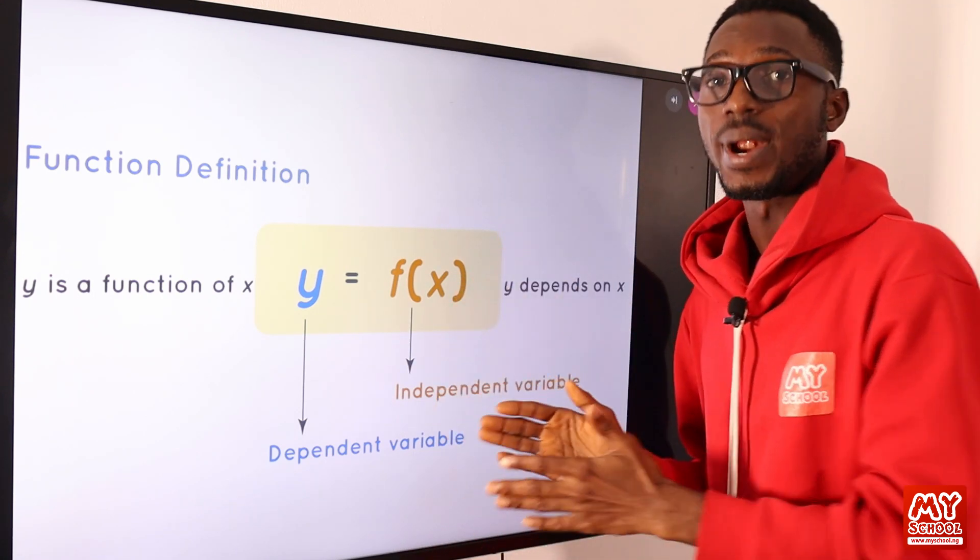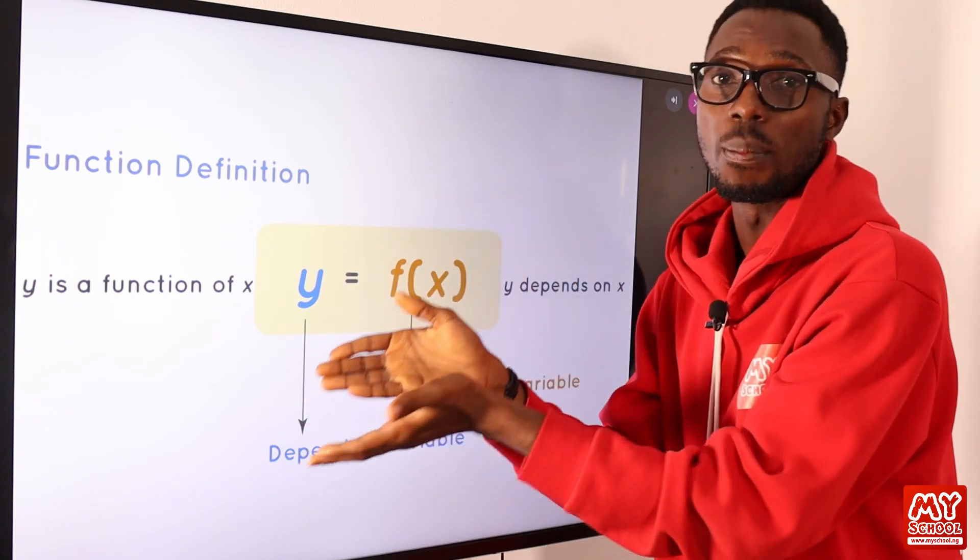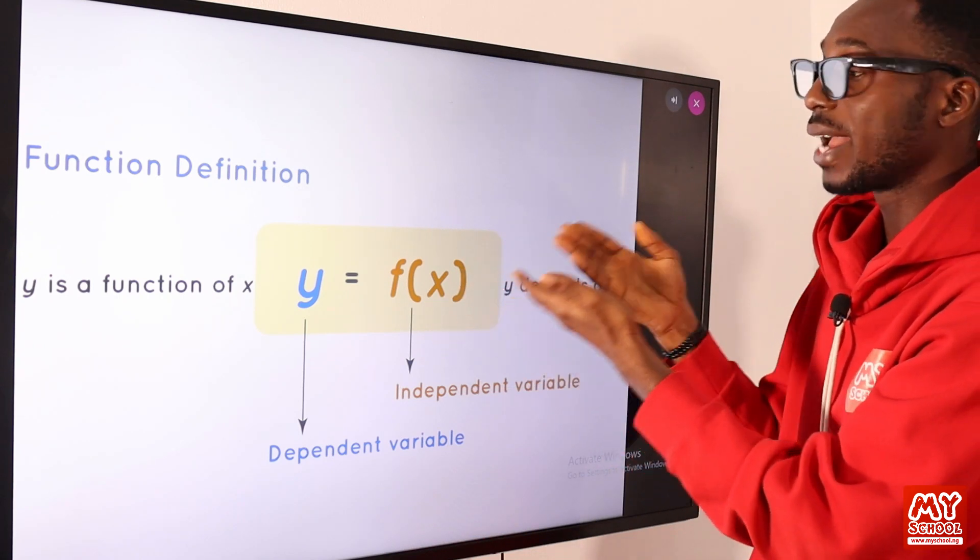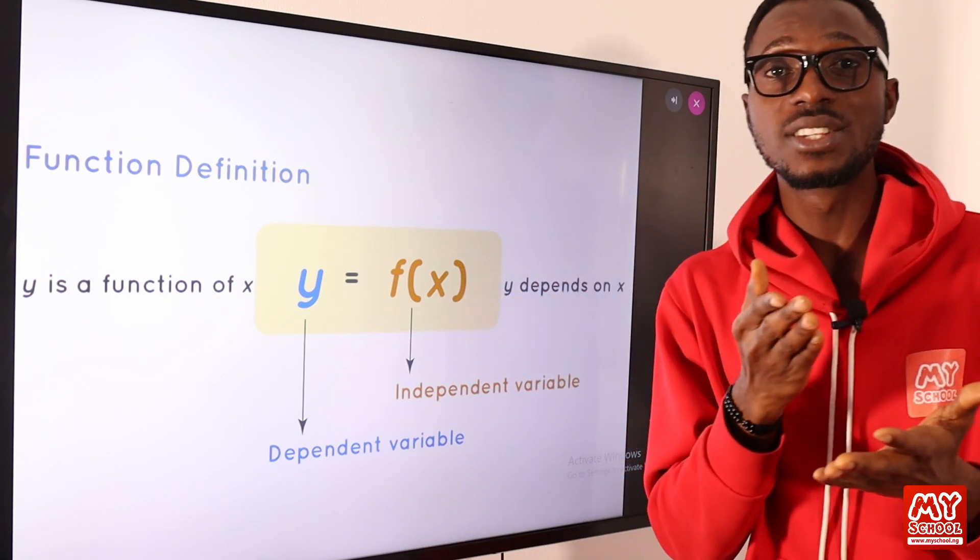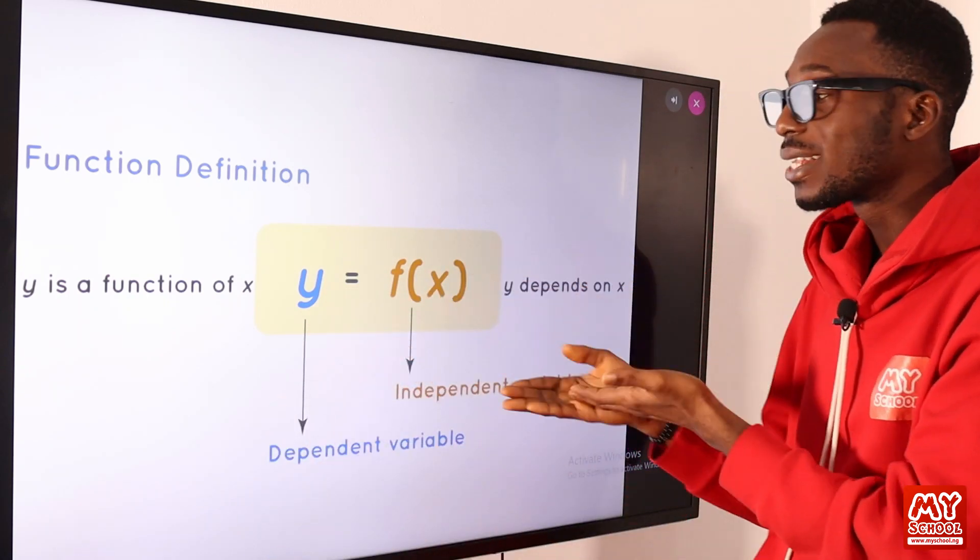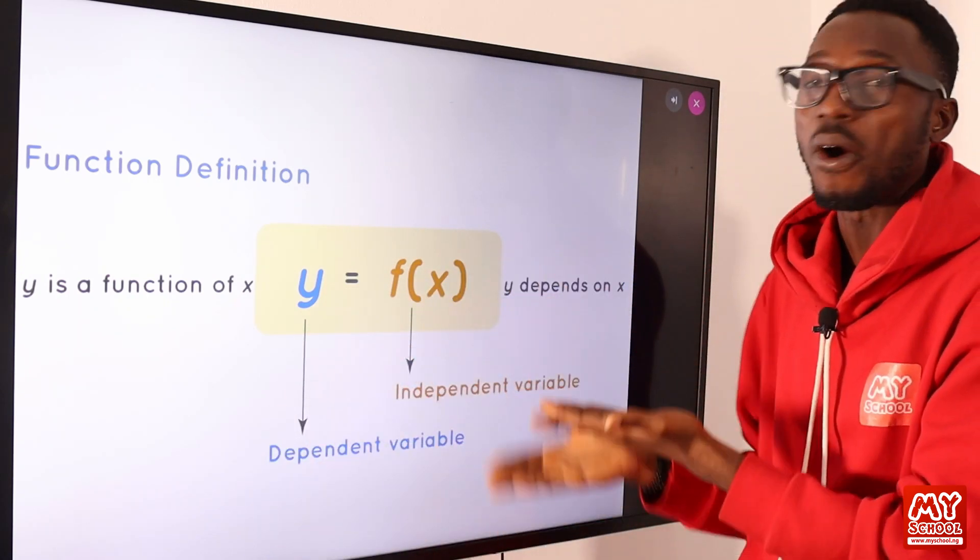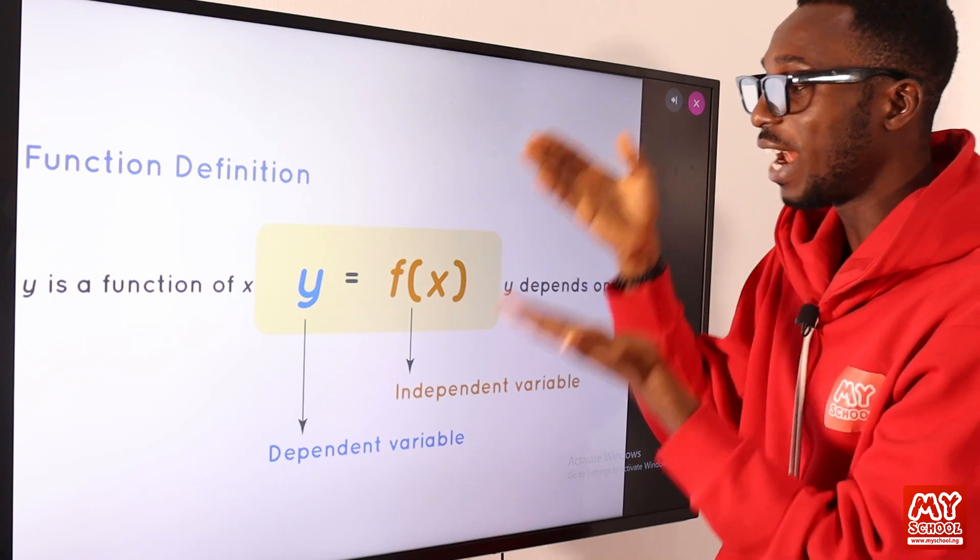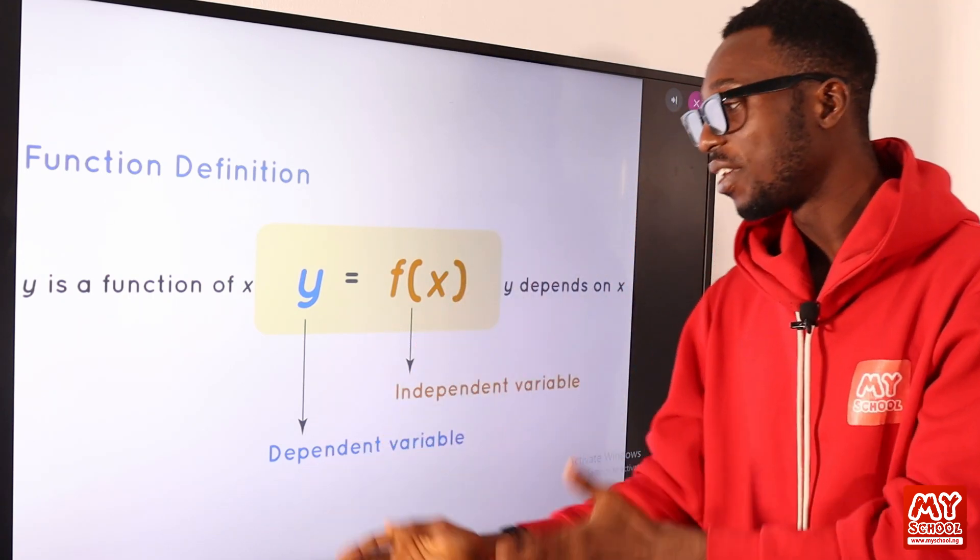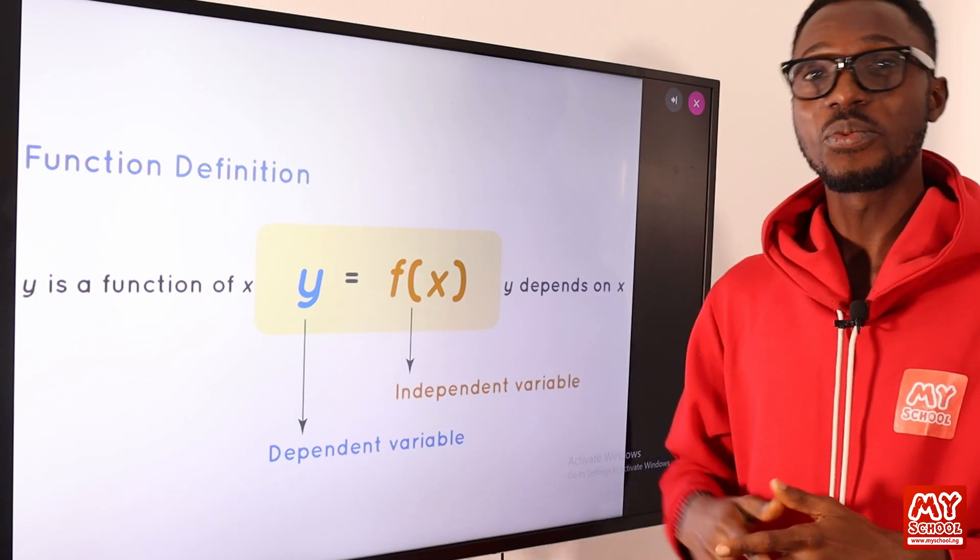Depending on the function that we are working with, when x is 2, that will determine what y will become. If the function we have is f(x) = x squared, when x is 2, that is 2 raised to power 2, which means y becomes 4. When x is 3, y becomes 9. You can see the value of y depends on the value of x.